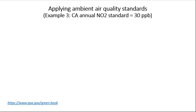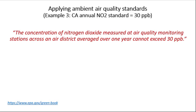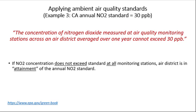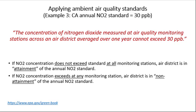As a final example, we take the annual California NO2 standard of 30 parts per billion. The concentration of NO2 measured at monitoring stations averaged over one year cannot exceed 30 ppb. If NO2 concentrations averaged over a year do not exceed 30 ppb at all monitoring stations, the air district is in attainment of the annual NO2 standard. If concentrations at any monitoring station do exceed 30 ppb annually, the district is in non-attainment.